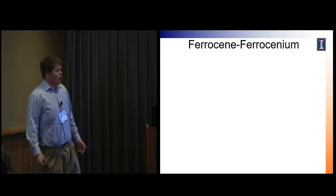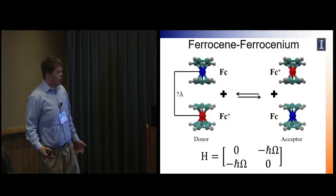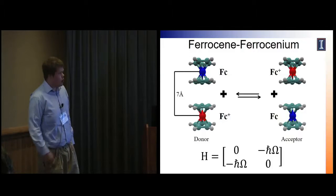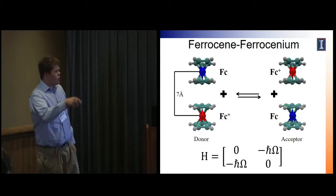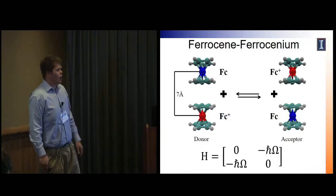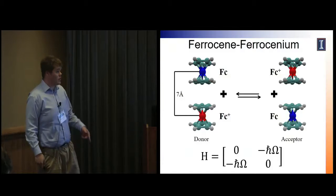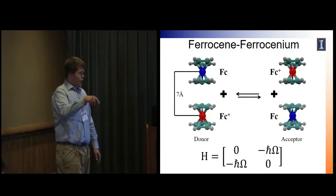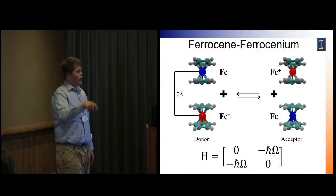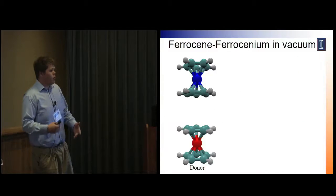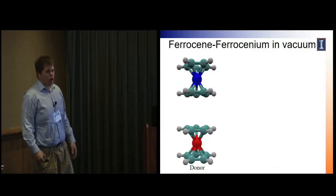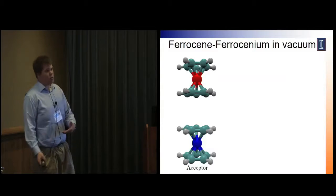Before talking about the system coupled to the solvent, I'm going to talk about ferrocene-ferrocinium charge transfer in vacuum. This is a graphical representation: the blue is the ferrocene and the red is the ferrocinium. On the left is the donor configuration and on the right is the acceptor configuration. The donor configuration has the ferrocene on top, and the acceptor has the ferrocene on the bottom. This is the Hamiltonian of the system, and you can see there are off-diagonal terms, so there's coupling between the donor and acceptor states.